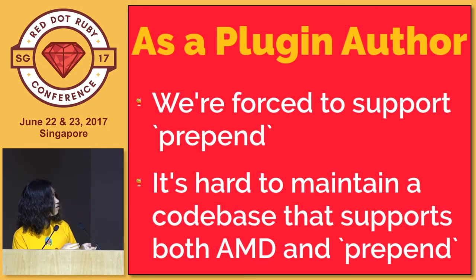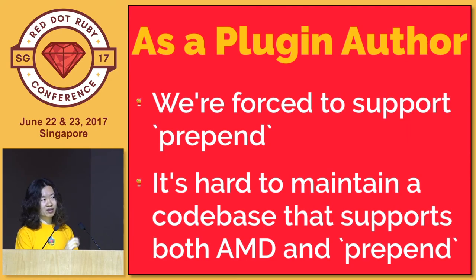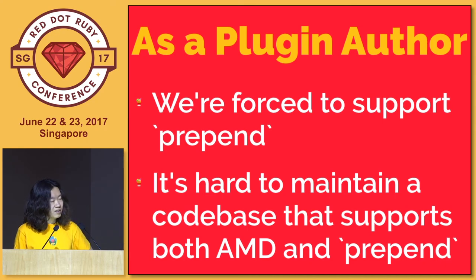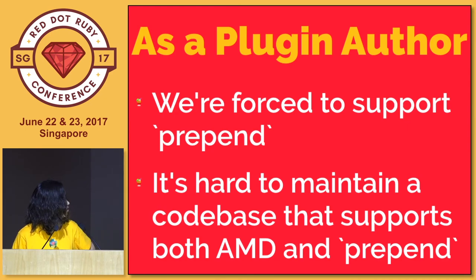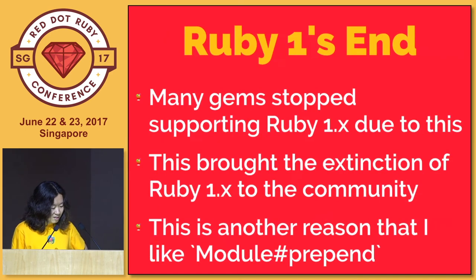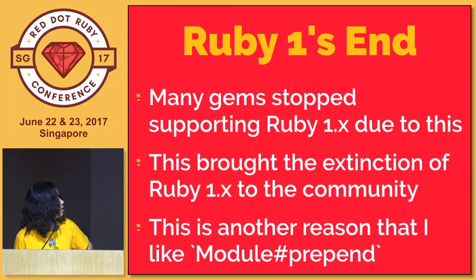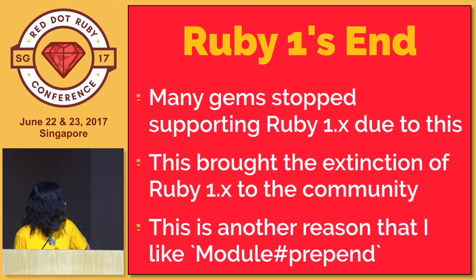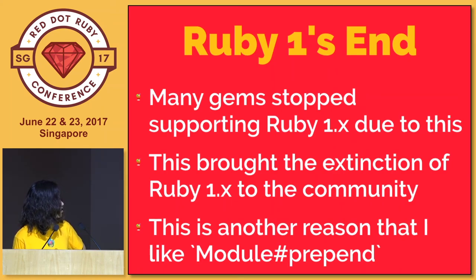You can use both in one code base if you really would like to by switching by Ruby version, but it's actually hard to support both. Because of this, many gems stopped supporting Ruby 1 because it's hard to support both 1 and 2. This is the reason I like this feature - because it killed Ruby 1.